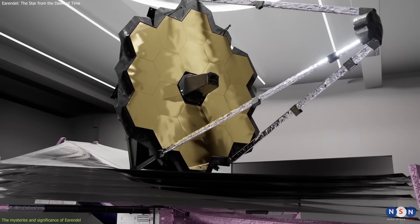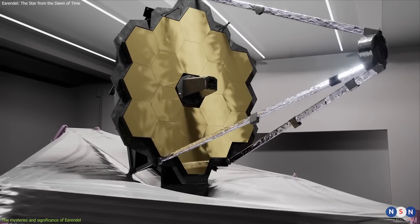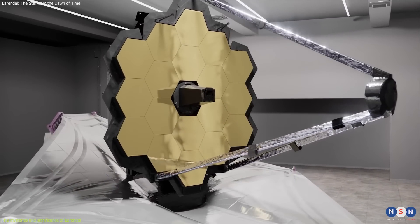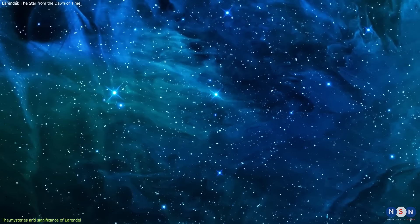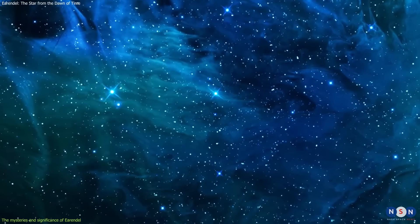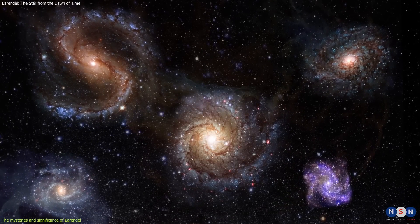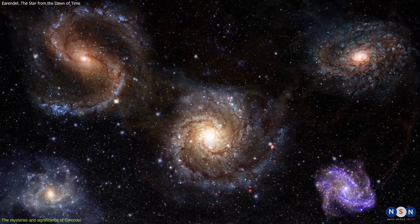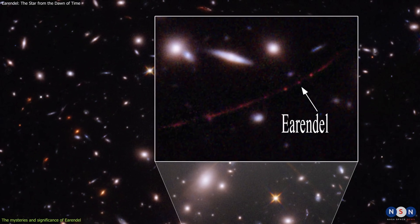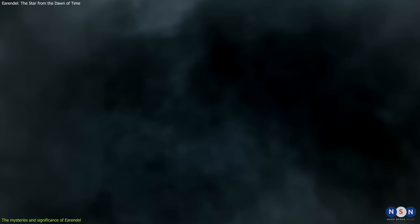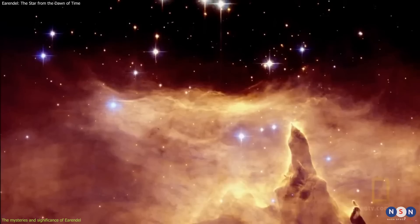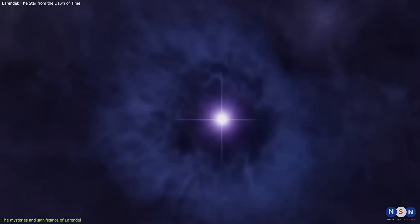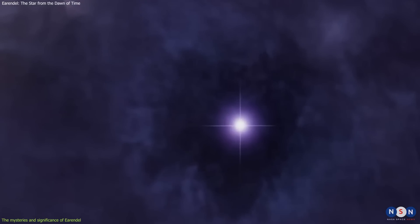The discovery of Earendel is a remarkable achievement for Webb and for astronomy. It opens a new window into the early universe and star formation. It is one of the first stars that ever existed, and it may have played an important role in shaping the history and evolution of galaxies. By studying Earendel, we can learn more about how stars form from gas and dust in the primordial cosmos, how they live and die, and how they influence their surroundings with their radiation and winds.